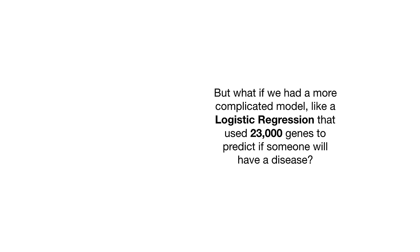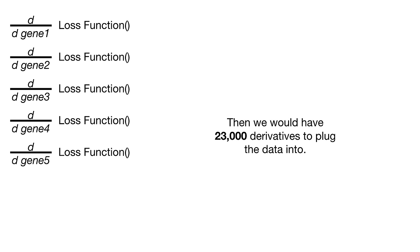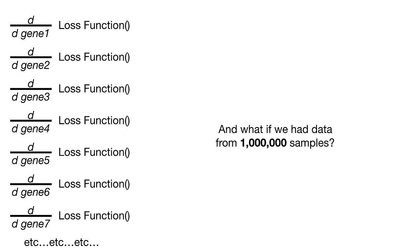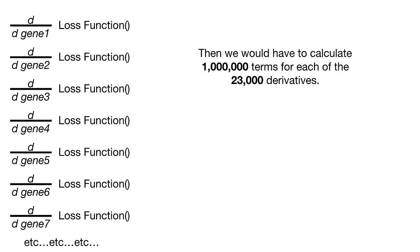Calculated the new intercept and new slope by plugging in the old intercept and old slope and the step sizes. And we did the math. And we ended up with a new intercept and a new slope. Then we went back to the derivatives and repeated the process a lot of times until we took the maximum number of steps or the steps became very, very small.